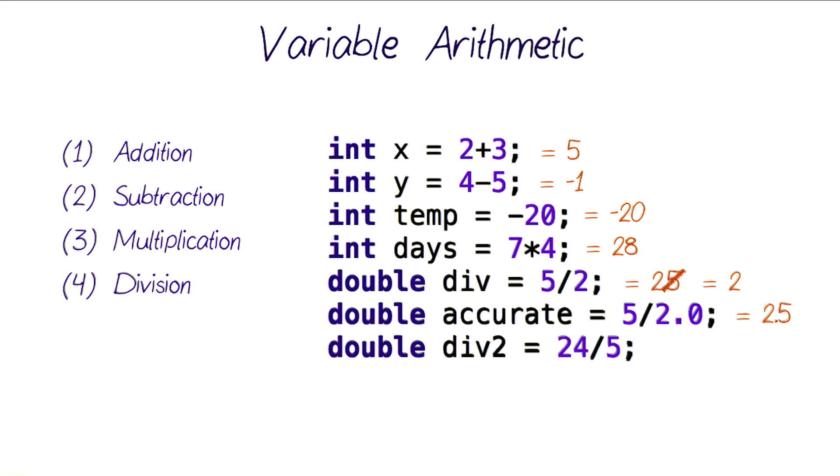This would happen with any division that has only two integers in it, like 24 divided by 5, even though that would result in 4.8. It will just throw away that fractional part and only store the value 4 into the variable div 2. Notice that it's not approximating it to the nearest integer. It's just throwing away that fractional part.